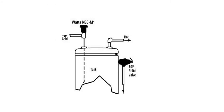A vacuum relief valve is a simple device that prevents collapse of a water heater or storage tank. It is required on bottom-feed water heaters or top-feed water heaters without a dip tube that has an anti-siphon hole in it — a little hole that's actually drilled into the top of the dip tube going into the water heater. If the building's water line were to shut down, the system can back-siphon the cold water line.